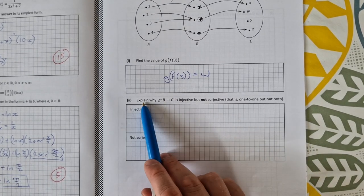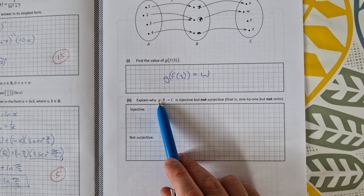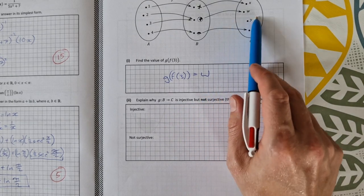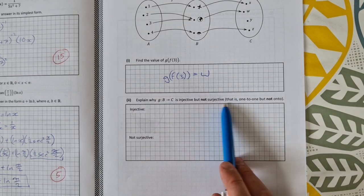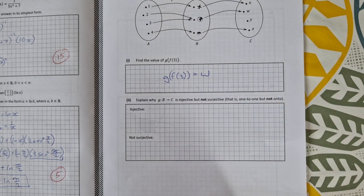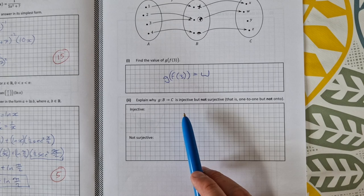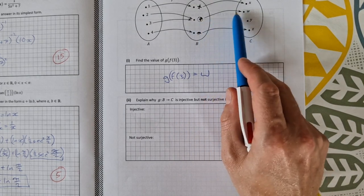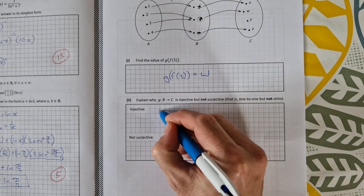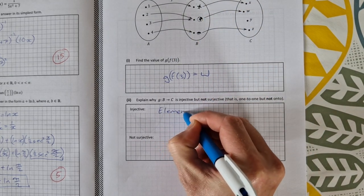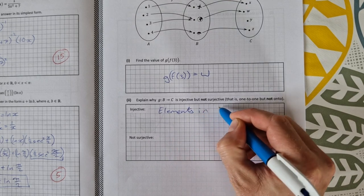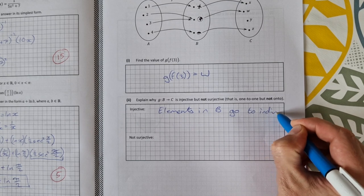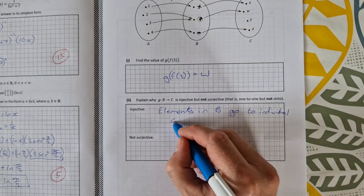And then in the second part explain why the g mapping b to c is injective but not surjective. So g why is this injective but not surjective? That is it's one to one but not onto. So it's injective because the elements in b go to individual outcomes in c. So this goes to z, this goes to w, this goes to x. So I would write down elements in b go to individual outcomes in c.